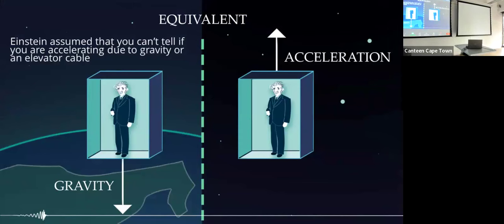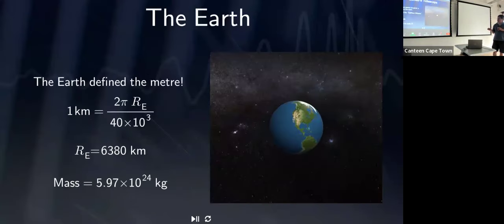Einstein made even more breakthroughs in our understanding of gravity. He realized that if you were in an elevator with no windows experiencing gravity due to Earth, you wouldn't be able to do an experiment that could tell the difference between Earth's gravity and the apparent gravity of being accelerated in outer space. This is one of the founding postulates of general relativity. But because gravity on Earth is so weak, it's actually very difficult to study general relativity using the Earth.